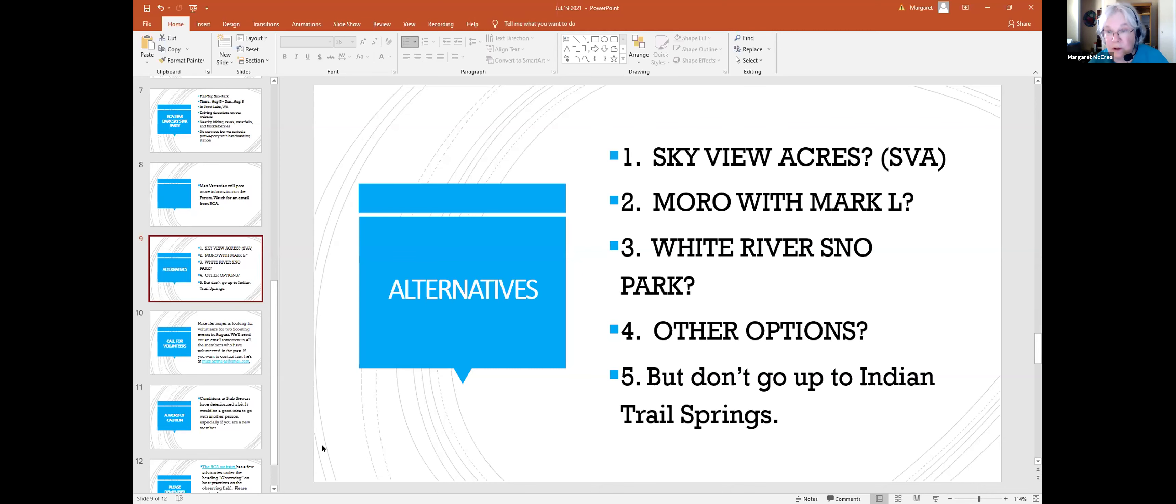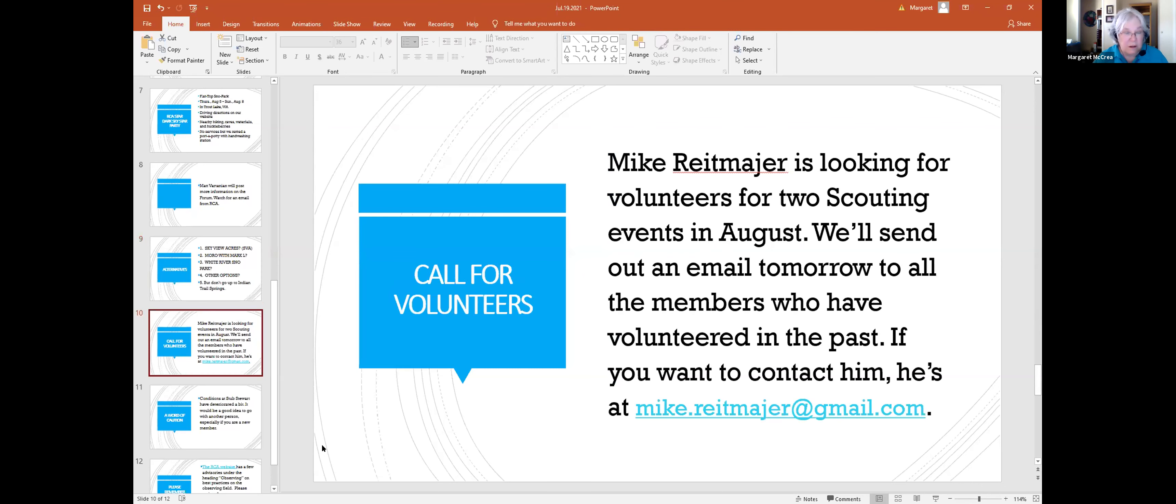Mike Reitmeyer is looking for volunteers for two scouting events in August. Mike, do you want to talk about that? We have two events coming up on Saturday August 21st and Thursday August 26th. I'm going to be needing probably at least two to three people besides myself with telescopes for both nights. We're expecting 70 to 80 guests per night, so three telescopes should cut it. The site is about two hours drive from Portland.